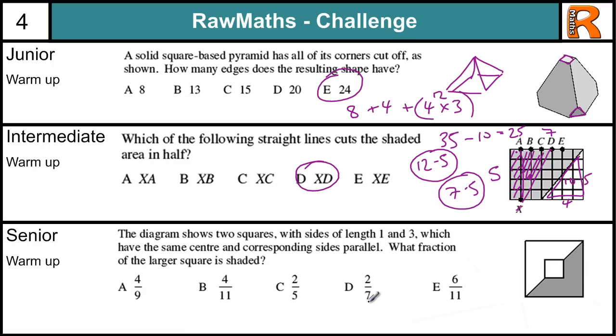Senior warm-up. The diagram shows 2 squares, 1 of length 1 so this is all 1 around the outside and this is 3 which have the same centre corresponding sides parallel. What fraction of the larger square is shaded? So the larger square has an area of 9 because 3 times 3 is 9. And if we figure out how much is shaded, if I chop this bigger square in half, that would be 4 and a half. But there is this little bit missing here which is half of 1 square. So half of this would be 4 and a half minus a half is 4. So the area of the shaded bit is 4 out of 9 the total. So 4 ninths is A.